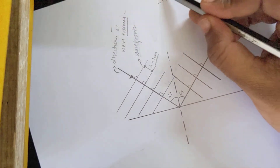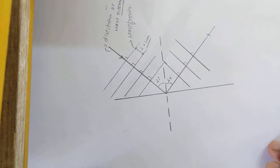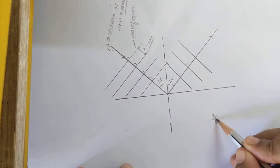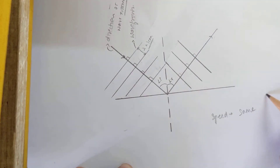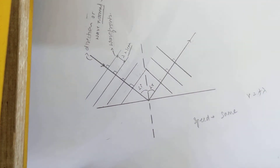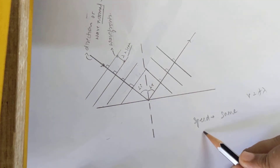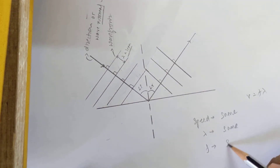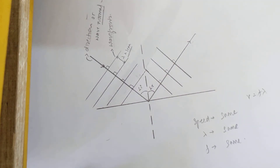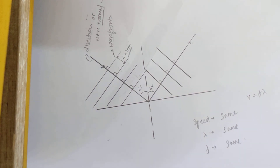An important thing to note: because it is reflection, it happens in the same medium. Because the wave stays in the same medium, the speed of the wave remains the same. Using the wave equation v = fλ, if your speed is the same, your wavelength also remains the same — it is unchanged. And your frequency, which is the number of waves, will always remain the same; it will never change. These are the key things to keep in mind when drawing a reflection diagram.